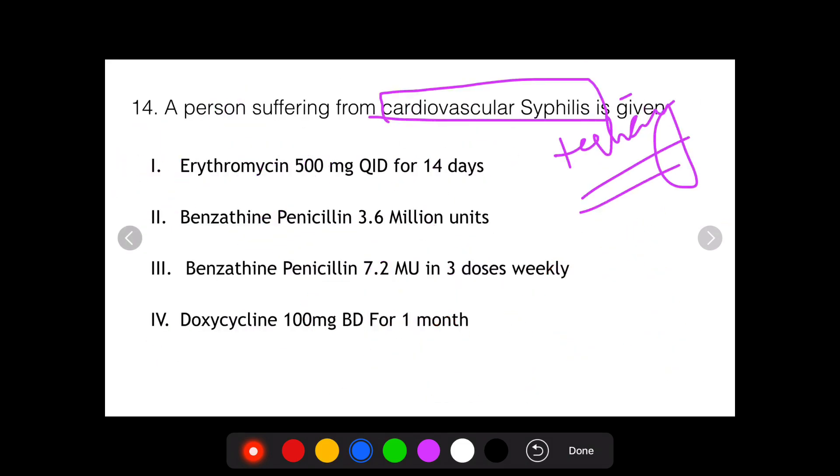If we see the question again, it's asking what's the treatment of choice for tertiary syphilis, that is cardiovascular syphilis, and the answer is simple. Benzathine penicillin, 7.2 million units in 3 doses weekly.